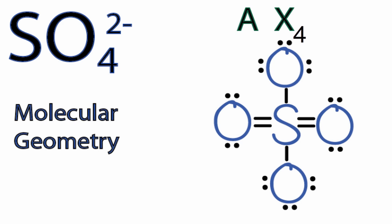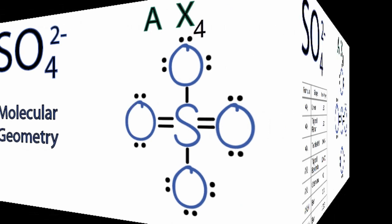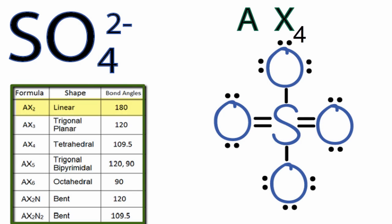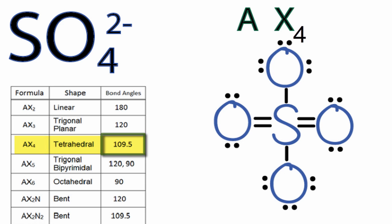You could have memorized that AX4 is a tetrahedral molecular geometry or if you have it available you can look it up on a table. Going down our table we see AX2, AX3, and there's AX4 which is tetrahedral and those bond angles are 109.5 degrees.